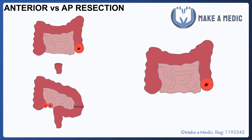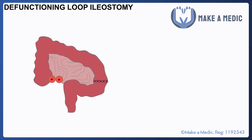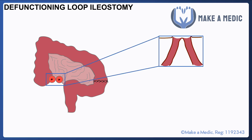If someone has an AP resection, that means they no longer have a rectum, anus, or sigmoid colon, so all they will be left with is an end colostomy. A defunctioning loop ileostomy is a slightly unusual concept but it does make quite a lot of sense. It involves bringing a loop of ileum to the surface and splitting it such that two lumens are seen on the surface.